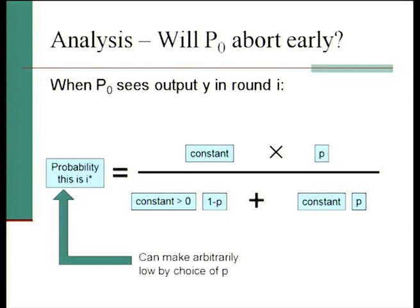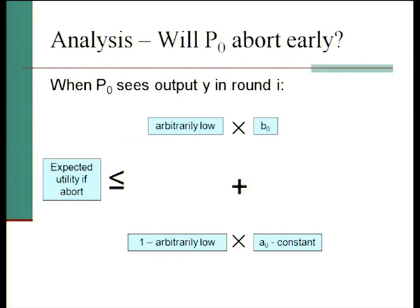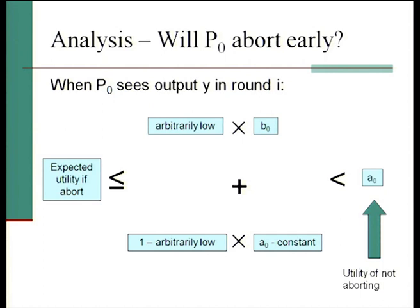By plugging in a very low p, we can force the expected utility of aborting to be less than A0 — making it as close as we want to A0 minus the constant rather than B0. Once the expected abort utility is less than A0, it's less than the utility of not aborting. If you deviate in any particular way and get lower utility than if you never deviated, you won't deviate — even if given some earlier deviation you might find it in your interest to deviate later, that's not enough to make you deviate in the first place.